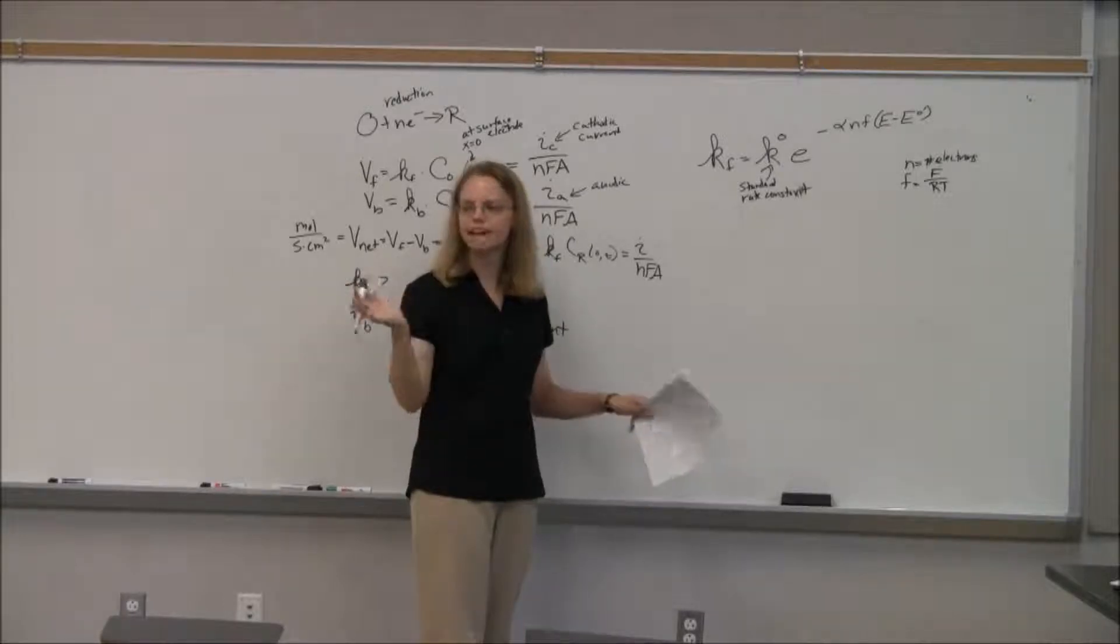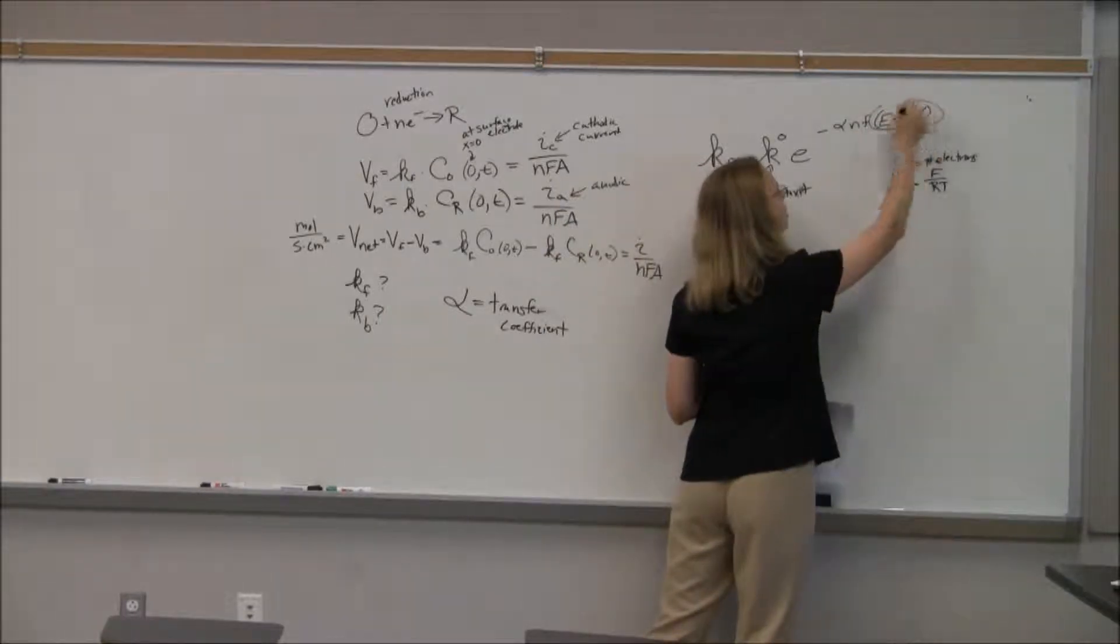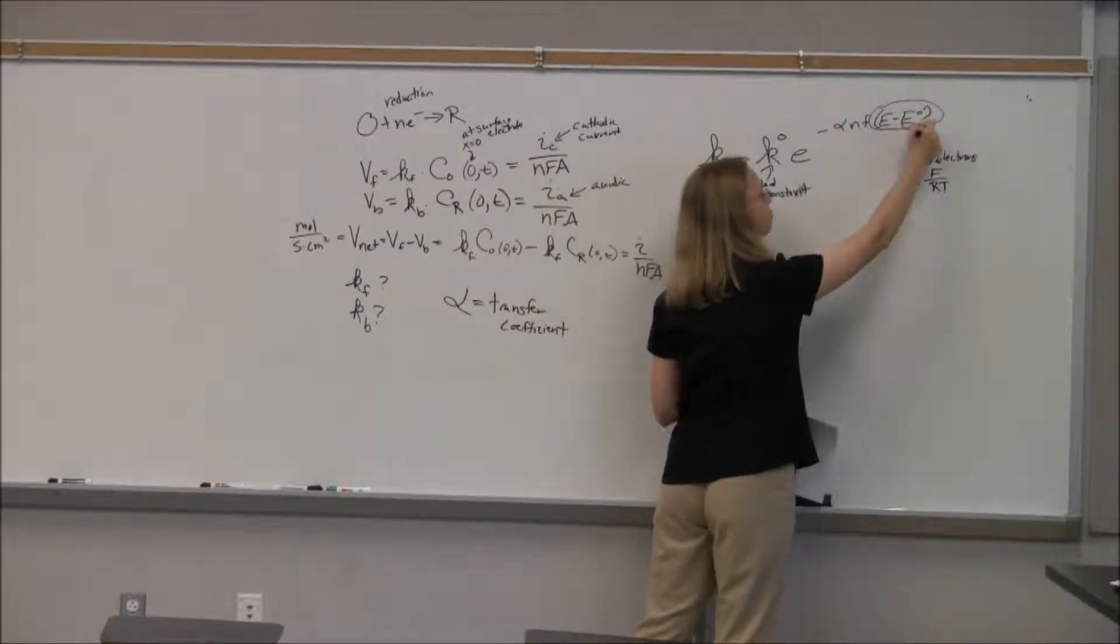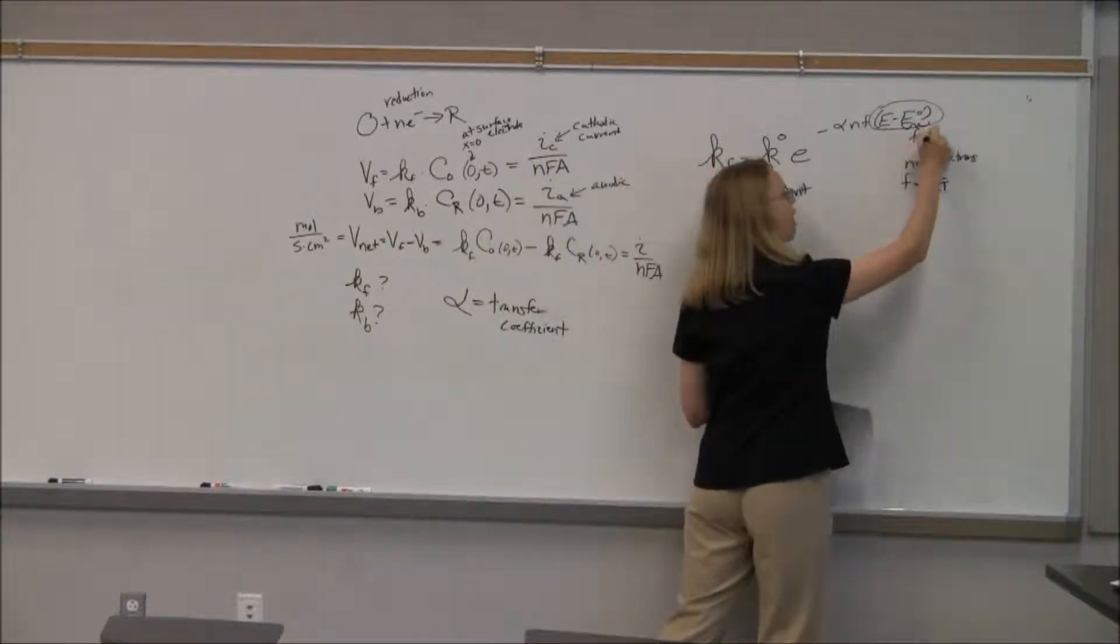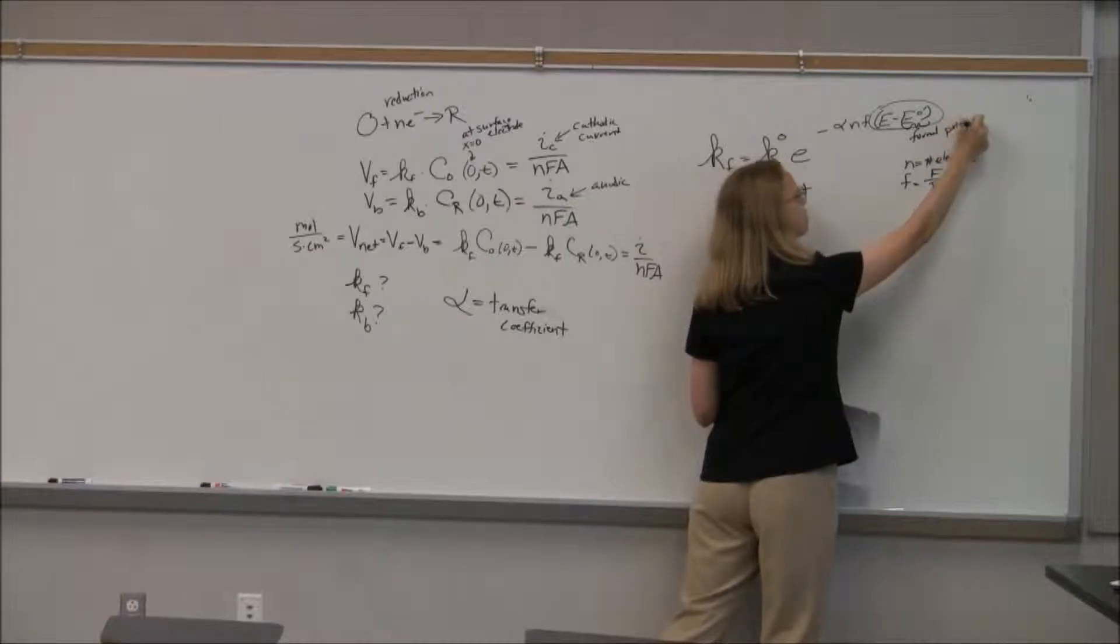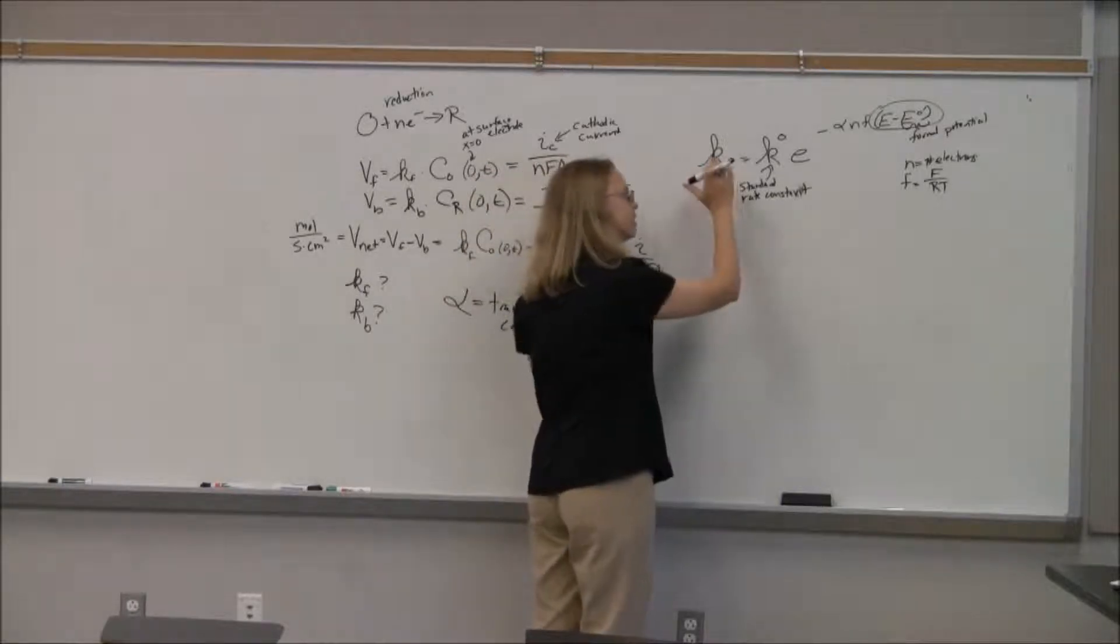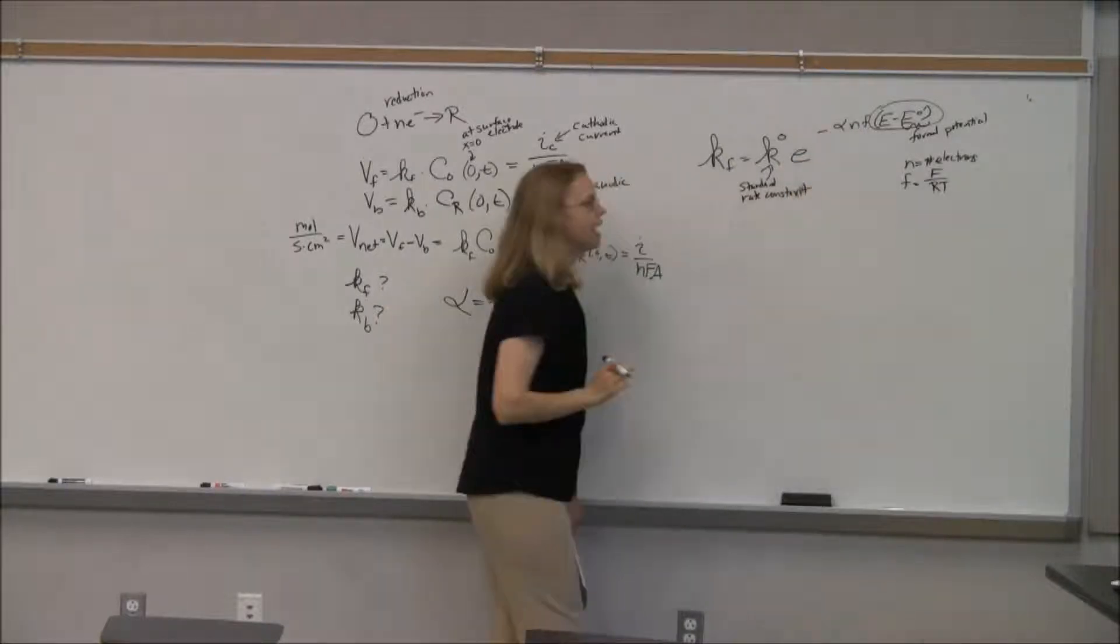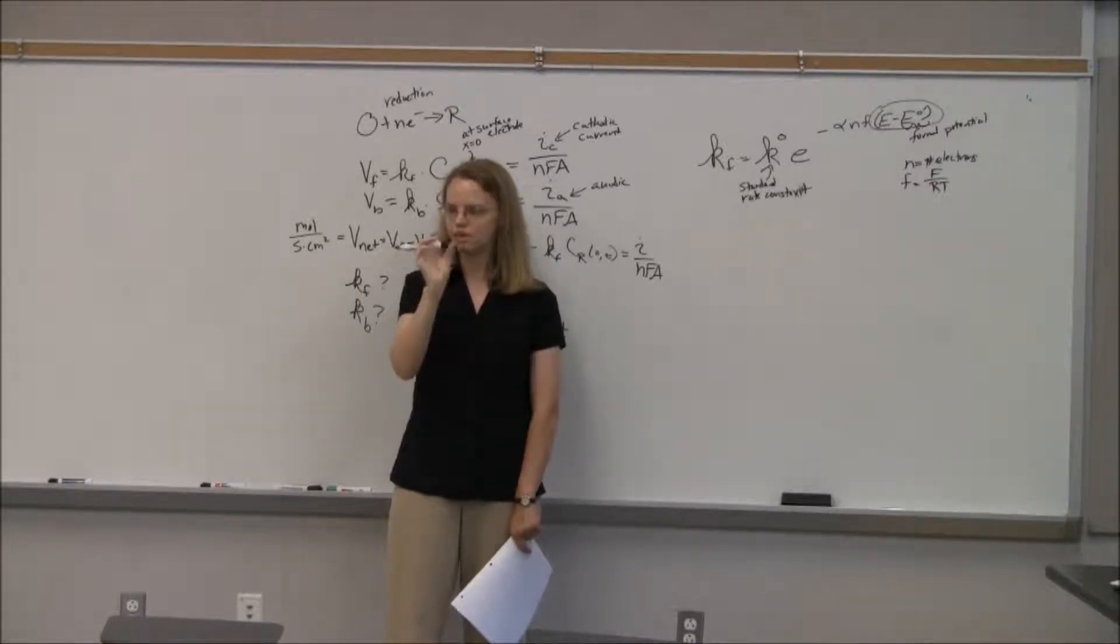The standard rate constant times e to the minus alpha. And there's a little f. I'll explain that in a minute. Times e minus e0 prime. So let's go over the terms for a minute. Alpha we just did. That's the transfer coefficient. And n is the number of electrons. It's pretty much our standard. In this case, I don't know why. We just use this f because they're too lazy to write out F over RT. So you know what we see over and over again, nF over RT, or RT over nF. I don't know why. In the textbook, they decided that they can't write out F over RT anymore. In fact, it's confusing in the textbook because they do this at first for one electron systems and they leave off the n. I found that confusing. But it's nF over RT. We've seen that a lot of times before.